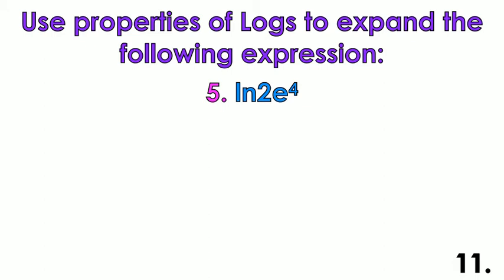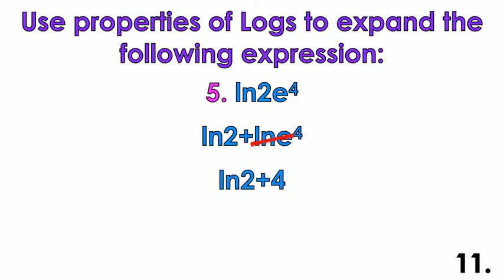Example: ln of 2e to the fourth. Remember, ln is log base e — you're going to need that. First, use the product rule to split it into ln 2 plus ln e to the fourth. Because ln is log base e, and we have log base e of e to the fourth, we can use the inverse property to cancel out the log base e and e, leaving just the exponent 4. So the final answer is ln 2 plus 4.